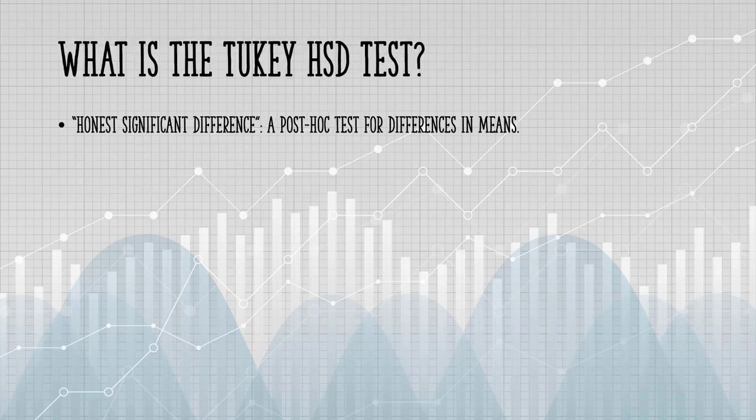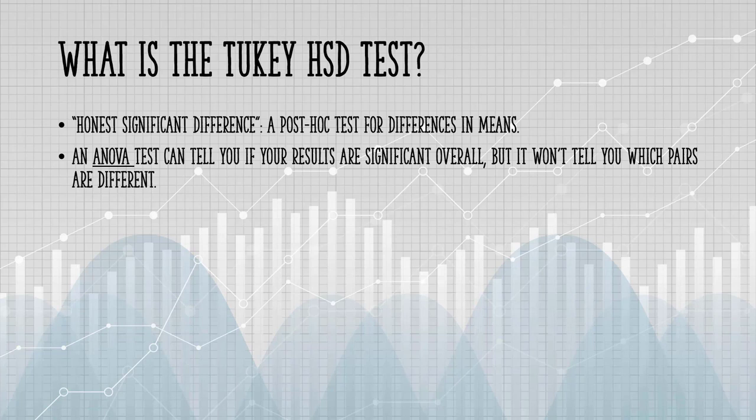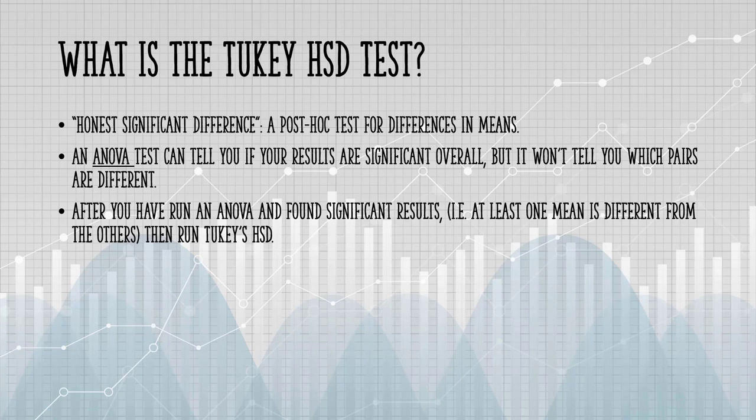So the Tukey HSD test is the Honest Significant Difference. It's a post-hoc test for differences in means between groups. While an ANOVA can tell you if your results are significant overall, it won't tell you which pairs of means are different. After you've run an ANOVA and found significant results, in other words, at least one mean is different from the others, then you run Tukey's Test.